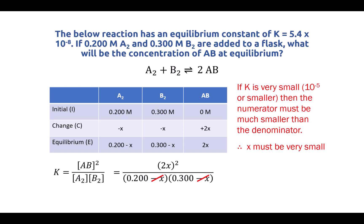We're allowed to do this by what we call the small x approximation. If k is very small, that means x must be very small. So subtracting a very, very small number from a larger number is essentially not going to change that number at all. So we're going to end up simplifying our equation to look more like this. We have 2x all squared in the numerator. And in the denominator, we've eliminated the minus x terms, and we now only have 0.2 times 0.3.